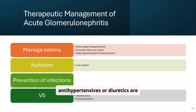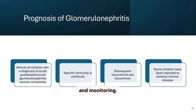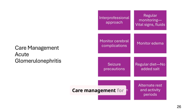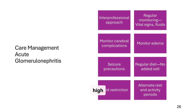Most kids with acute glomerulonephritis recover fully at home, but some need hospitalization if symptoms are severe. The prognosis for acute post-streptococcal glomerulonephritis is generally excellent in children. Specific immunity is conferred and recurrences are uncommon. It's rare for them to need dialysis unless it's a severe case. Care management requires an interprofessional approach — regular monitoring of vital signs and fluids, seizure precautions due to high BP, and dietary modifications. Daily weights are more reliable than output sometimes. Collaborate with dieticians and teach families to support low-sodium diets at home.